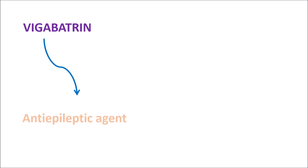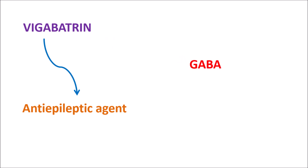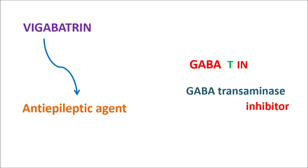What is this drug Vigabatrin? It is classified as an anti-epileptic. Interestingly, the drug name itself contains the term GABA — which is an inhibitory neurotransmitter within the CNS that can reduce neuronal excitation. The name also contains the letter T, giving us 'GABA-T,' which indicates the enzyme GABA transaminase. This enzyme is responsible for the metabolism of GABA. Finally, the suffix 'in' indicates it is an inhibitor. So simply put, Vigabatrin is a GABA transaminase inhibitor.